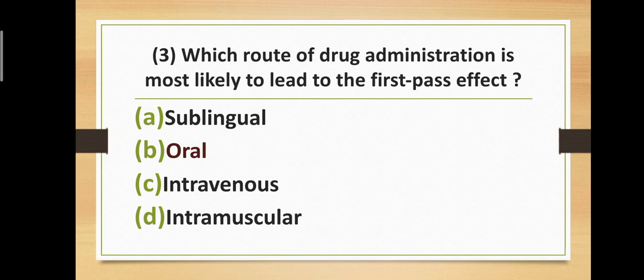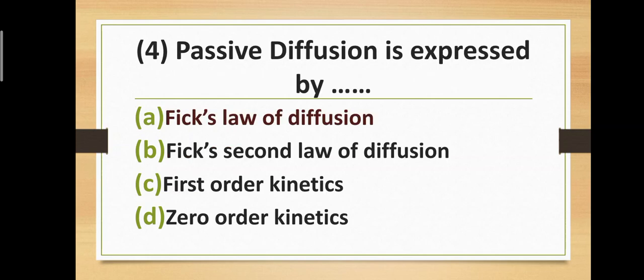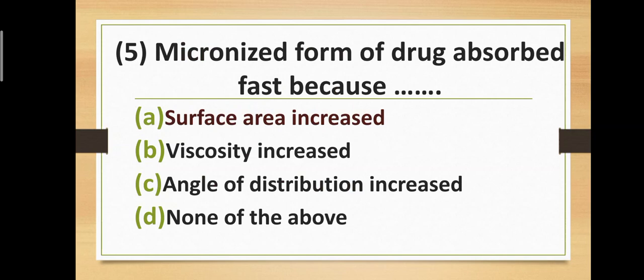Question number four: Passive diffusion is expressed by — Option A: Fick's law of diffusion. Option B: Fick's second law of diffusion. Option C: first order kinetics. Option D: zero order kinetics. The correct answer is option A — Fick's law of diffusion. Passive diffusion is expressed by Fick's law of diffusion.